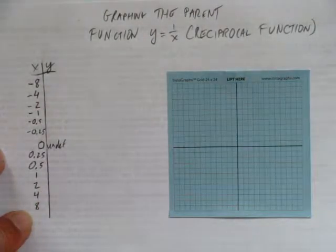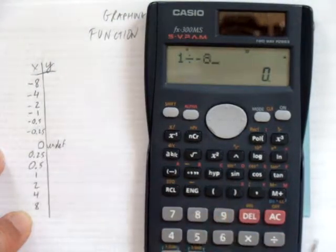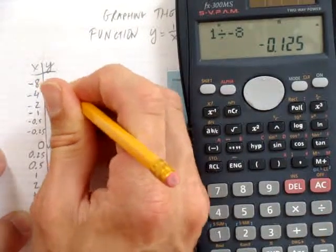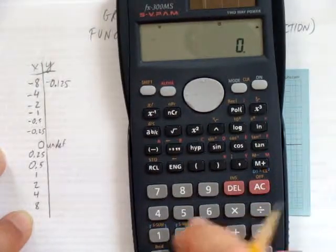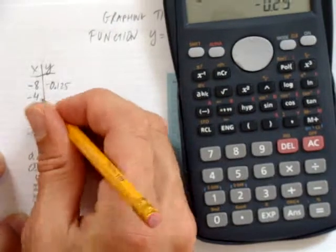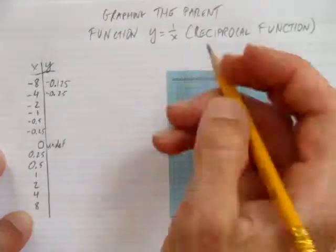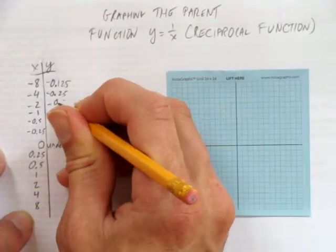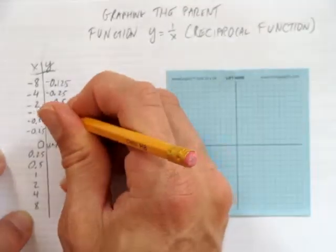There's a lot of values we have to check out here. Well, let's start. 1 divided by negative 8 is negative 0.125. And 1 divided by negative 4, that's just negative 1 quarter, or negative 0.25. You might not need a calculator for some of these. For example, 1 divided by negative 2 is negative 0.5. Or 1 divided by negative 1, 1 over negative 1 is just negative 1.